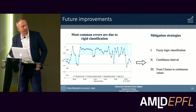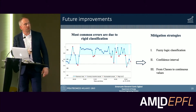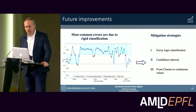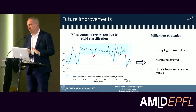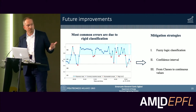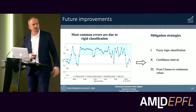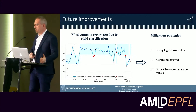Looking at a daily clearness index trend, the light blue area represents the actual clearness index classes while the blue line shows the machine-learning-forecasted class. The red dots represent edge errors — samples close to two neighboring classes. To mitigate this, we plan to introduce fuzzy logic, confidence intervals, or continuous clearness index values rather than rigid discrete classes.